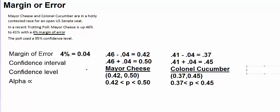So 4% is your margin of error. We added and subtracted the margin of error to get our confidence interval. I represented this with two different notations. The last thing we're going to talk about is the confidence level.